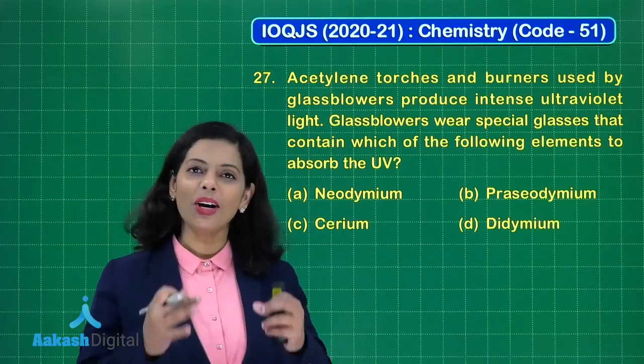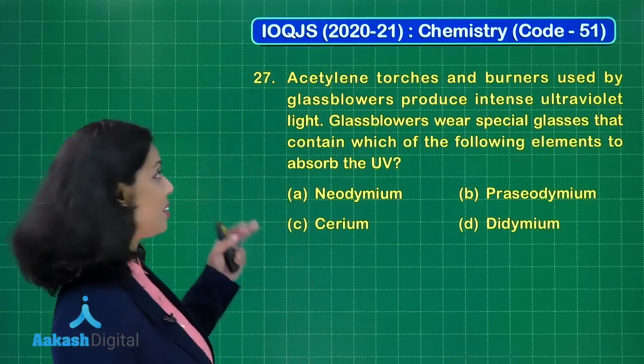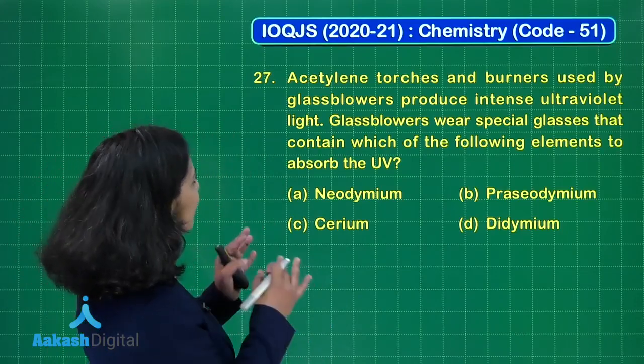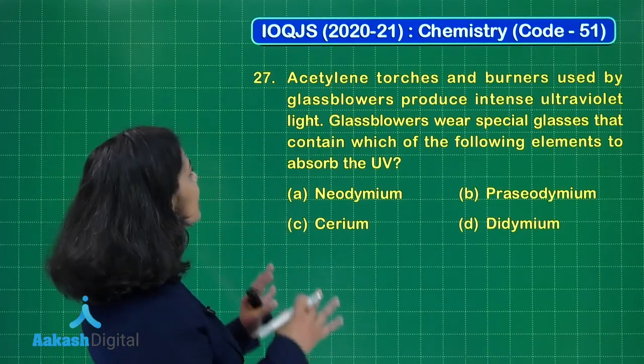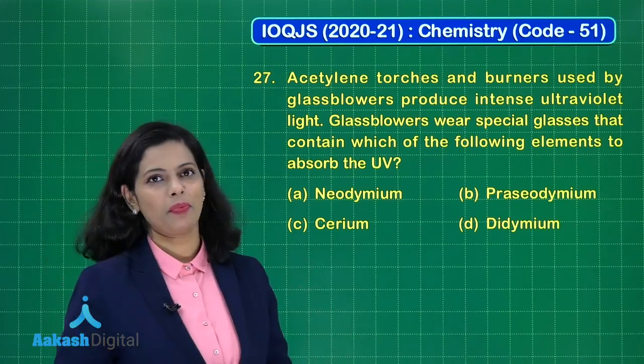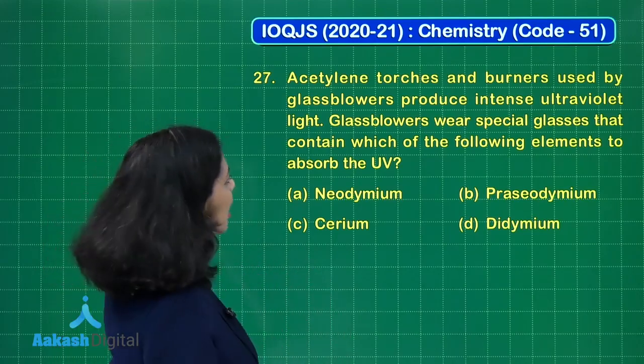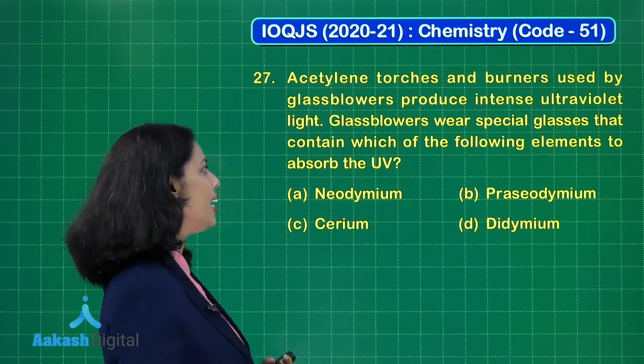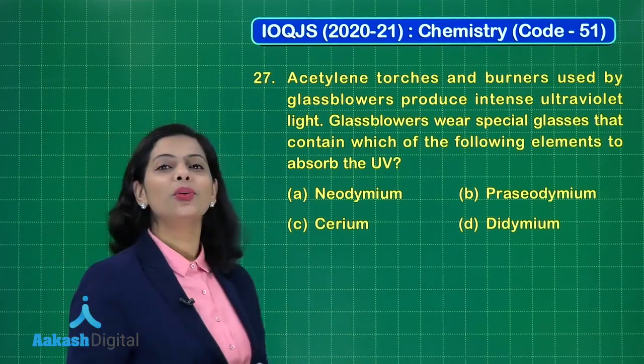Now this is the turn for the next question, that is question number 27. Acetylene torches and burners used by glassblowers produce intense ultraviolet light. This is a fact.